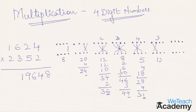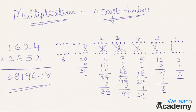In the next step, 6 into 2 plus 3 into 1 gives 12 plus 3, which is 15. Plus the 3 carried forward, 15 plus 3 is 18. So 8 is taken to the final result and 1 is carried to the next step. In the final step, we multiply the thousands digits: 2 into 1 is 2, plus the carried 1, gives 3. This 3 is taken to the final result, giving the final answer for 1624 multiplied by 2352.